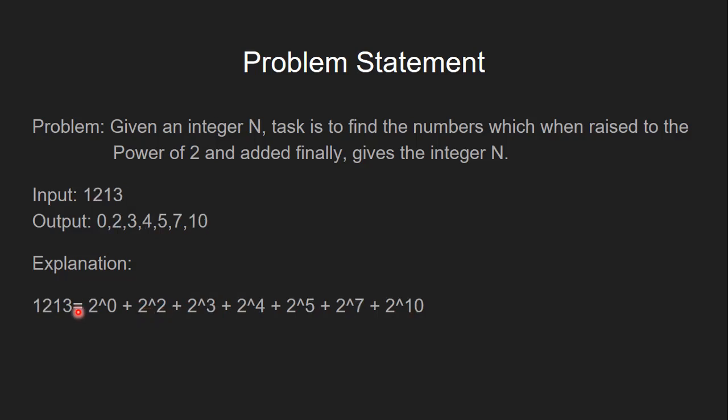Let's see another example. If input is 1213, the output is 0, 2, 3, 4, 5, 7 and 10. Here also, when we raise all these numbers to the power of 2 and add them together, the result of addition will be our number n.